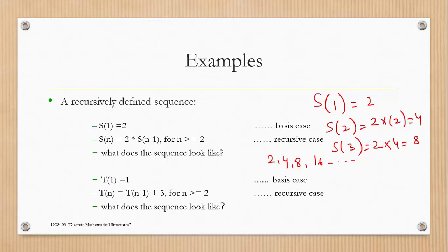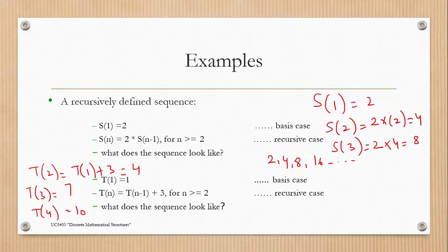In the second example, we have the base case t(1) = 1, and t(n) = t(n-1) + 3. So t(2) = t(1) + 3 = 1 + 3 = 4. And t(4) = t(3) + 3 = 7 + 3 = 10. So our sequence will be 1, 4, 7, 10, and so on.